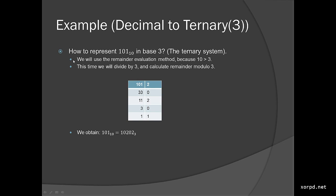We are going to use again the remainder evaluation method, again for the same reason — because 10 is larger than 3. I remind you that when we tried to convert from decimal to binary, we used exactly this same method. We used the remainder evaluation even in that case. Now, even if we had to represent this number in base 4, I would still choose this method for the conversion. The main difference from the other case when we converted to base 2 is that this time we are going to divide by 3 instead of 2.